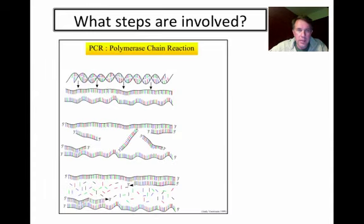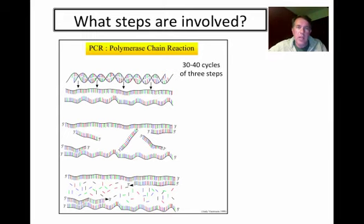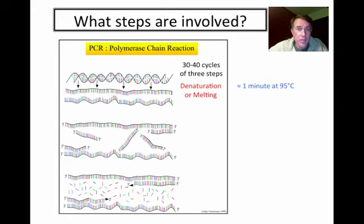What steps are involved in the polymerase chain reaction? Really, what we're talking about is 30 or 40 cycles of just three different steps. The first step is known as denaturing, or melting, of the DNA. The DNA is held together by hydrogen bonds between the nucleotides, and we need to break those — unzip or denature the DNA. That's accomplished by heating the sample for about a minute up to 95 degrees centigrade. You can see why we need an enzyme that is very stable, because 95 degrees would denature most enzymes.